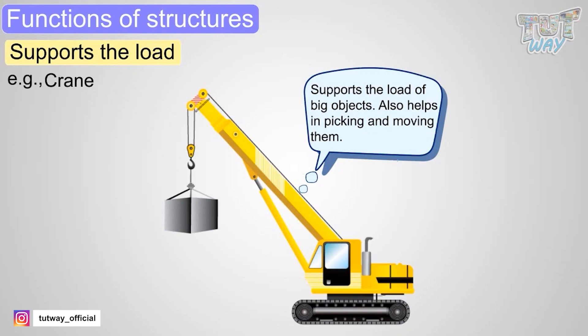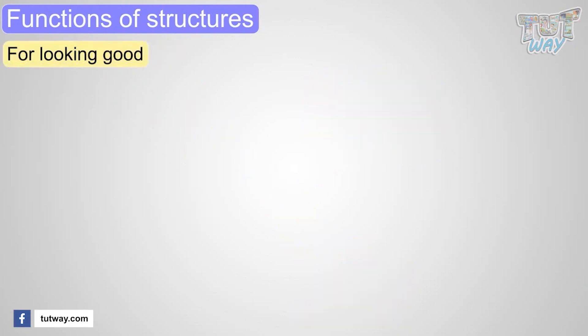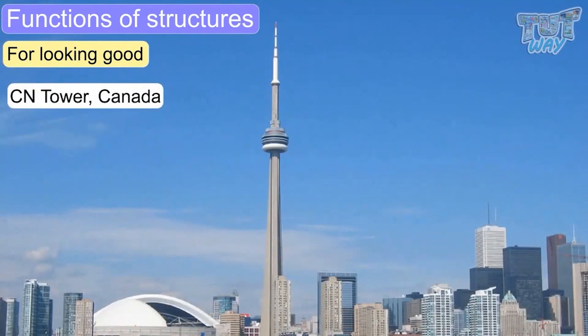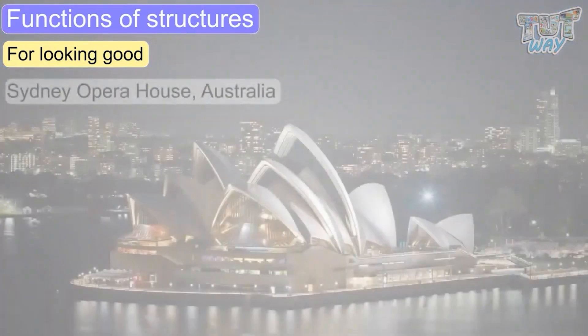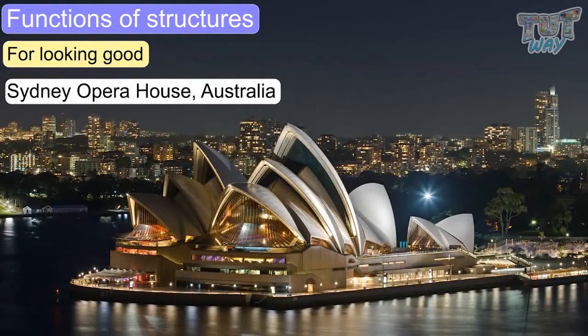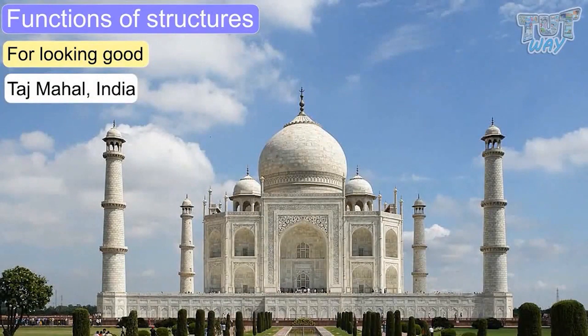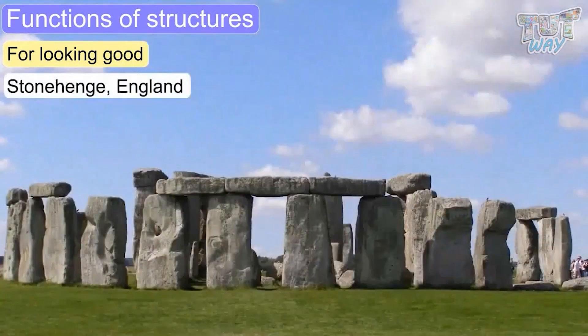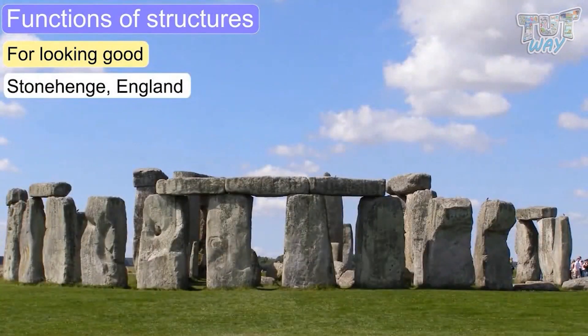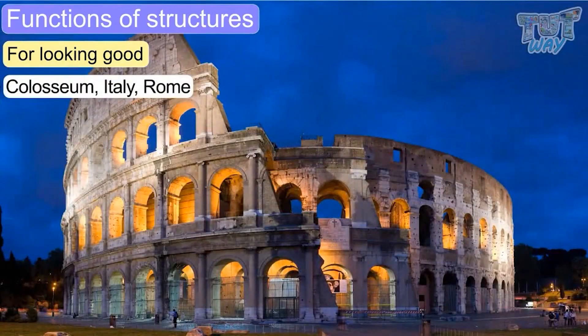There is another important function of structure and that is for looking good. Some man-made structures are made to look nice. Let's have a look at some famous beautiful structures. CN Tower, Canada. Sydney Opera House, Australia. Taj Mahal, India. Stonehenge, England, Amesbury. The Colosseum, Italy, Rome.